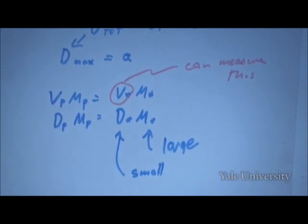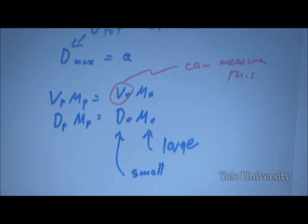What you do is you look for the reflex motion of the star. The planet's going around the star, and the star's going around the center of mass also. And that is a motion that these days can be observed. You can see why this might have happened only very recently, because that motion is really very small.